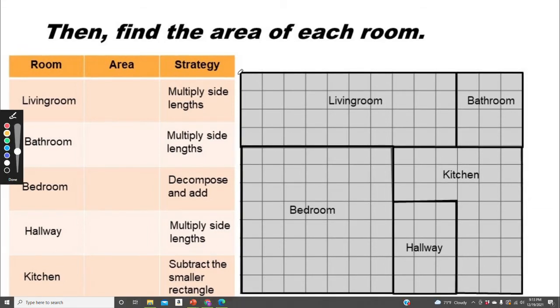So for the living room, we have a rectangle. That means that we can just multiply the length times the width to find the area. So our strategy is multiply side lengths. For the bathroom, again we have a rectangle, which means that we can multiply the side lengths.